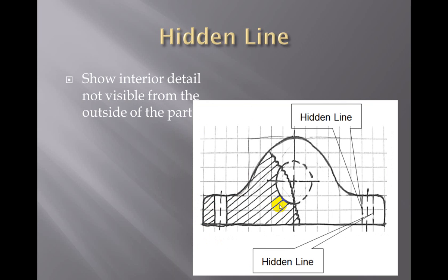Hidden lines show interior detail that's not visible from the outside of the part. Notice hidden lines are drawn as a dashed line. What's important about the hidden lines is that they're not a solid line. They're marked as a dash to show that the inside of this part that you look at has been drilled out.